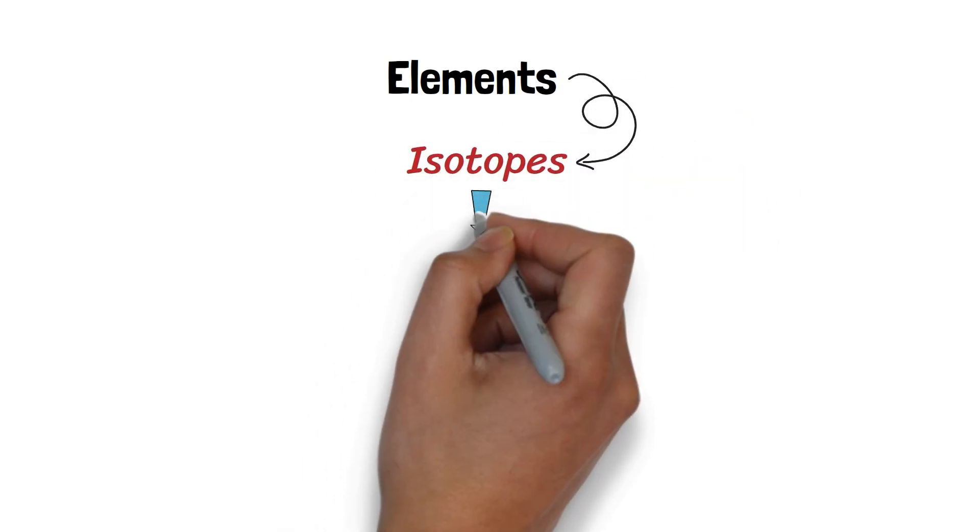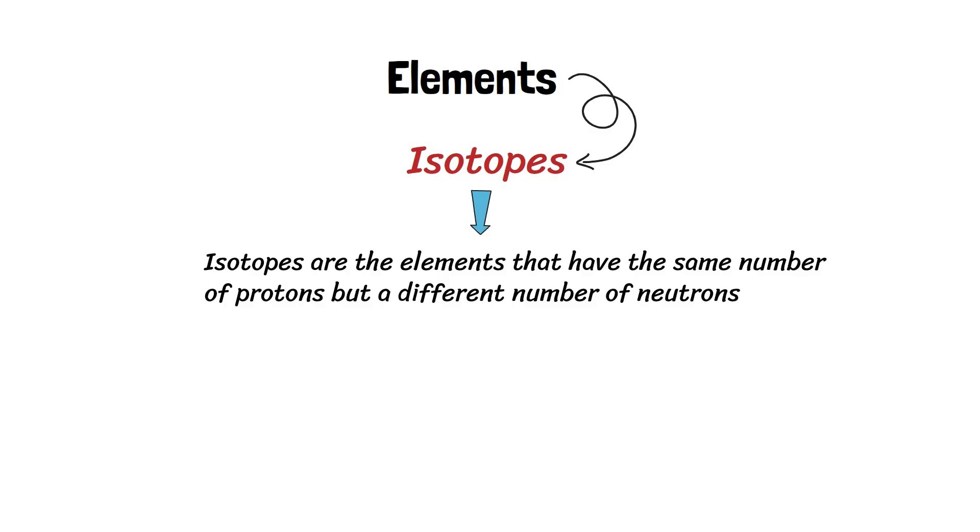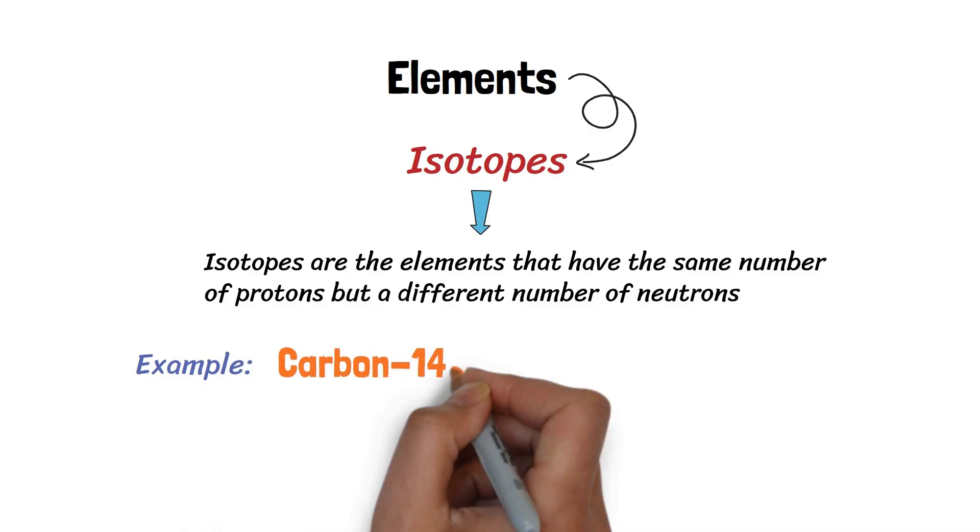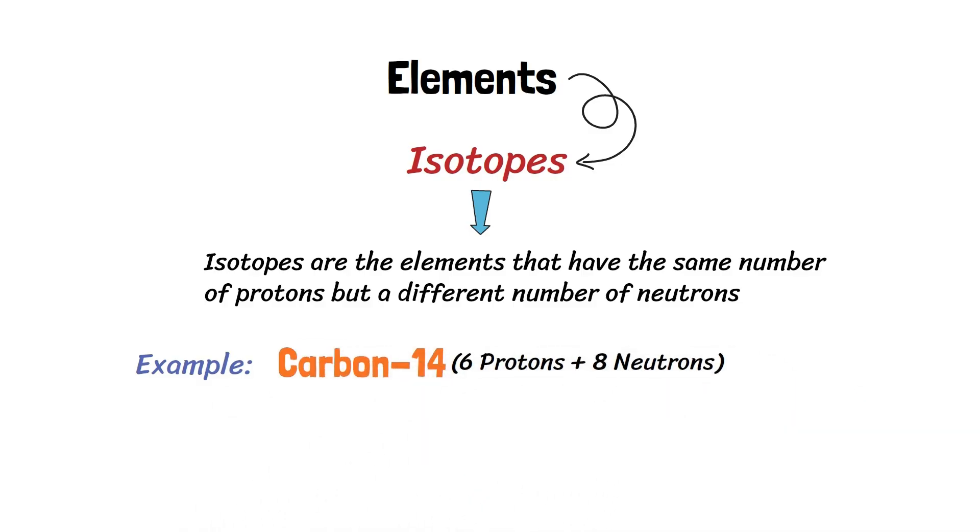Some elements are also available in the form of isotopes. Isotopes are the elements that have the same number of protons, but a different number of neutrons. For example, the carbon-14 isotope has six protons and eight neutrons, which will have heavier atomic mass.